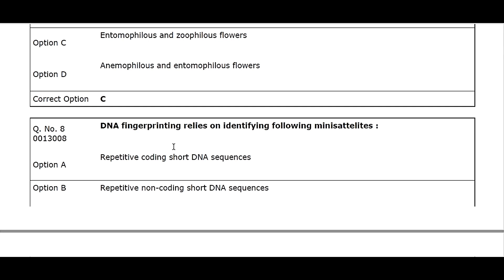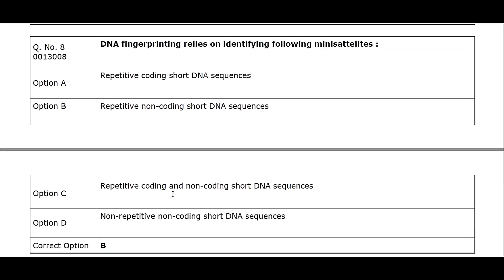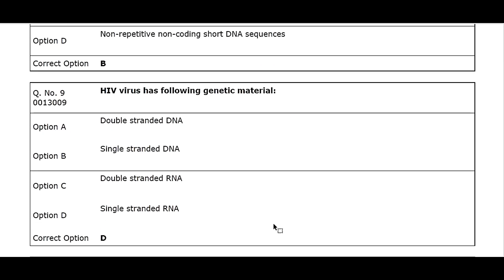Q8. DNA fingerprinting relies on identifying following mini satellites: Option A. Repetitive coding short DNA sequences. Option B. Repetitive non-coding short DNA sequences. Option C. Repetitive coding and non-coding short DNA sequences. Option D. Non-repetitive non-coding short DNA sequences. Correct option B.